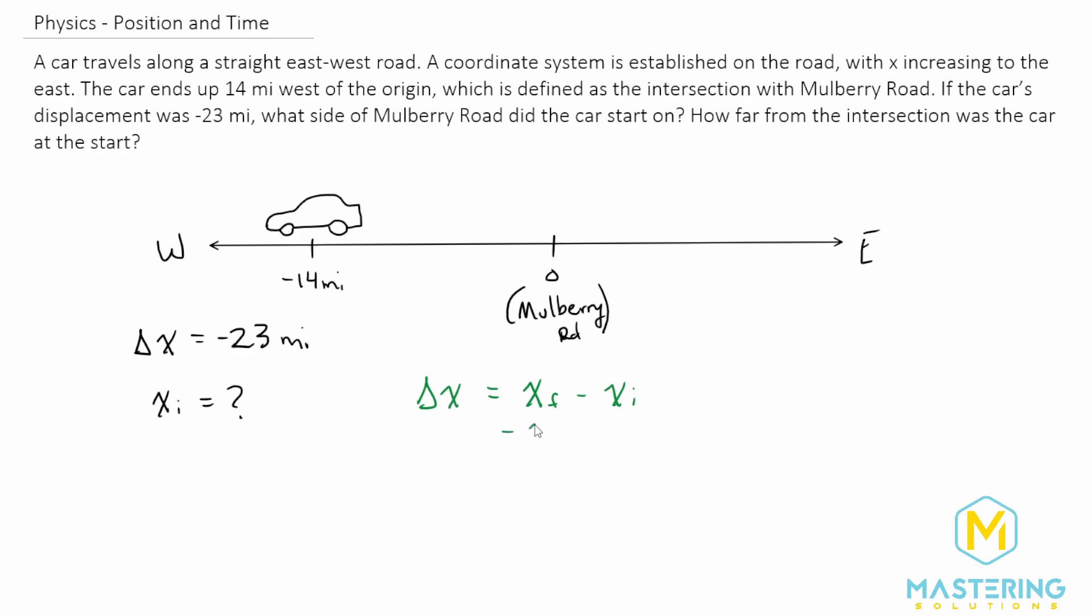Let's subtract x final from both sides of the equation. That gives us Δx minus x final equals negative x initial.